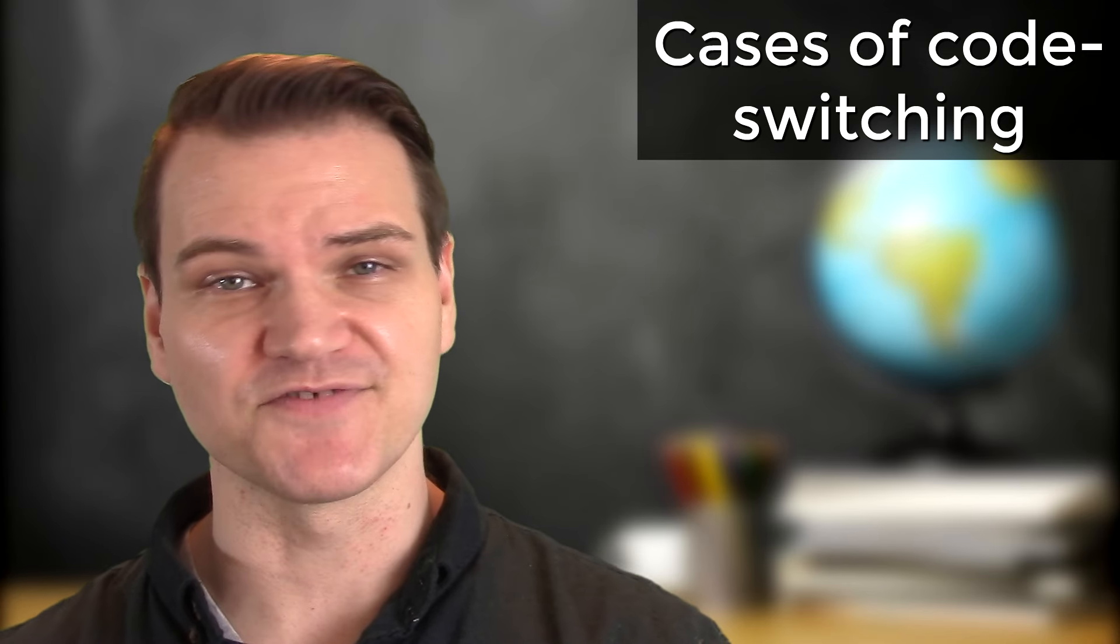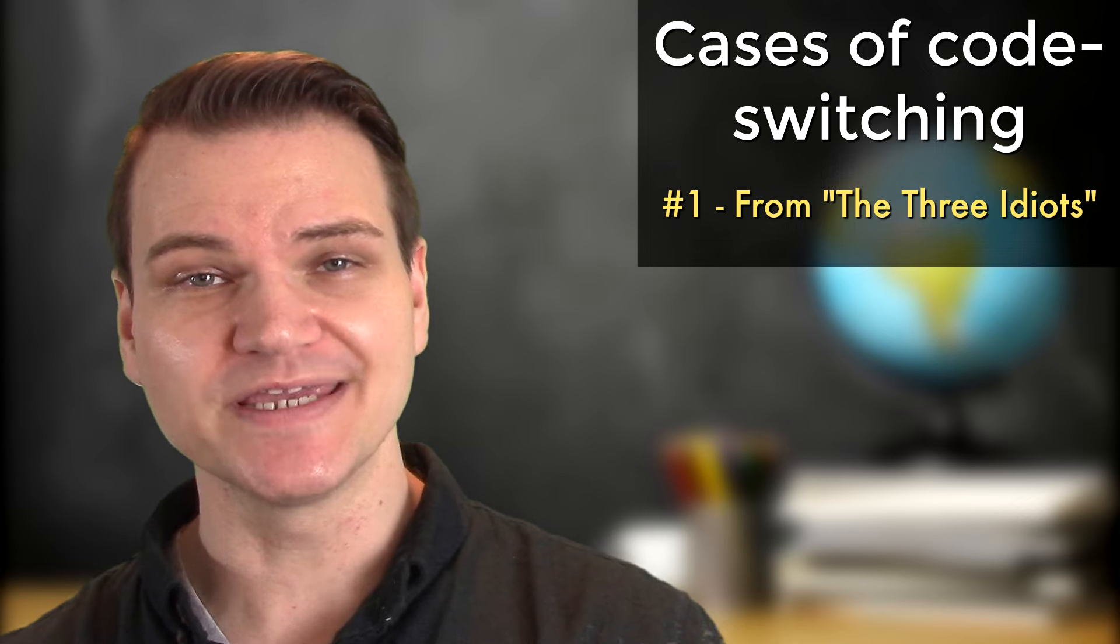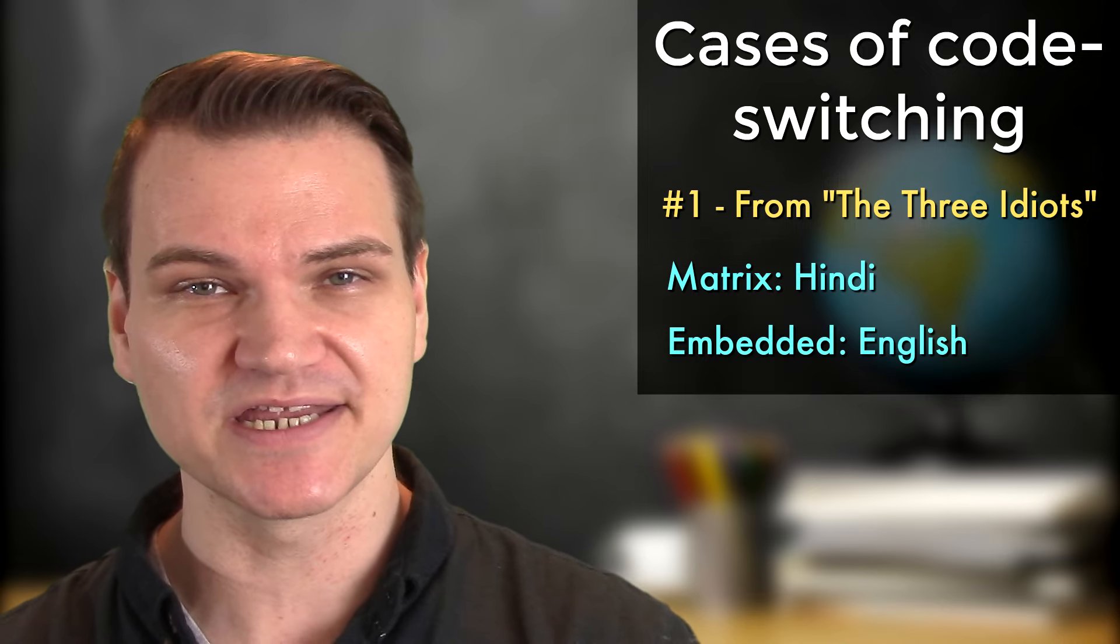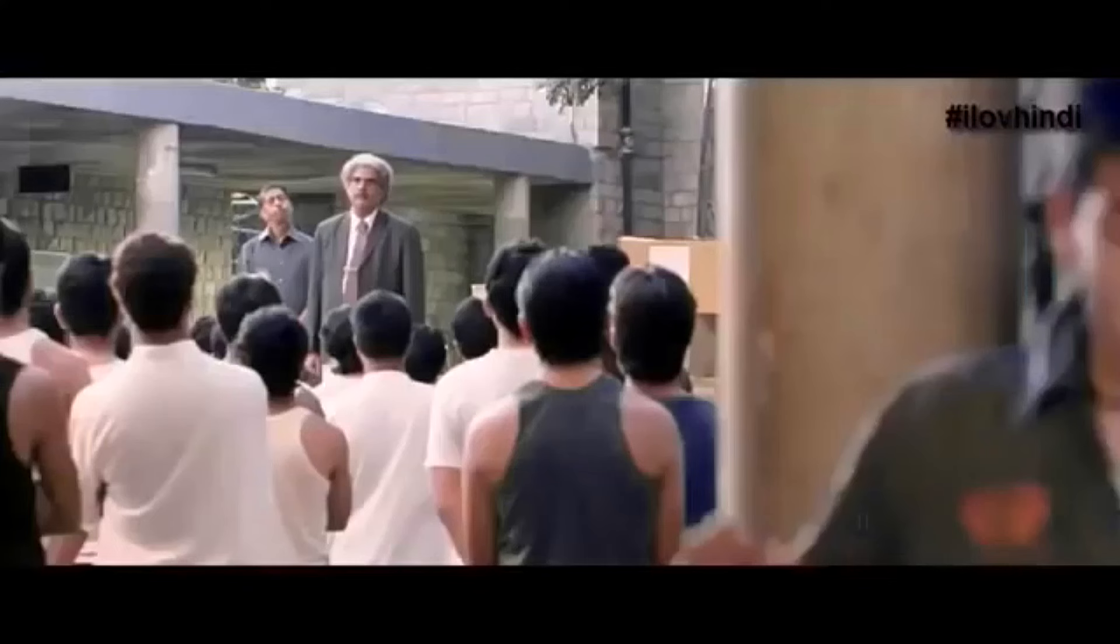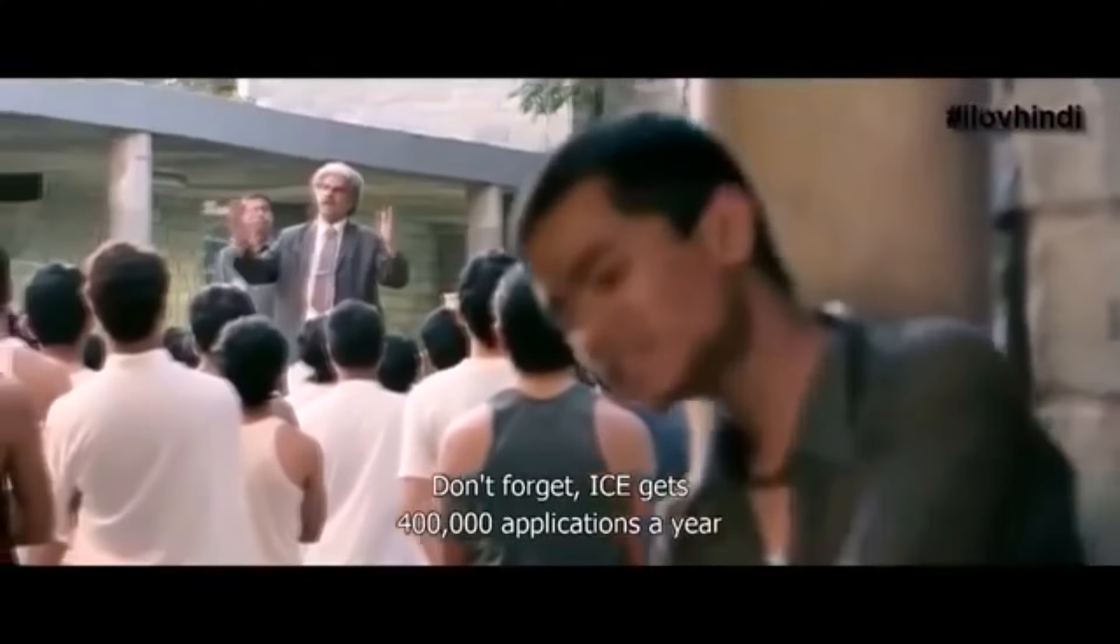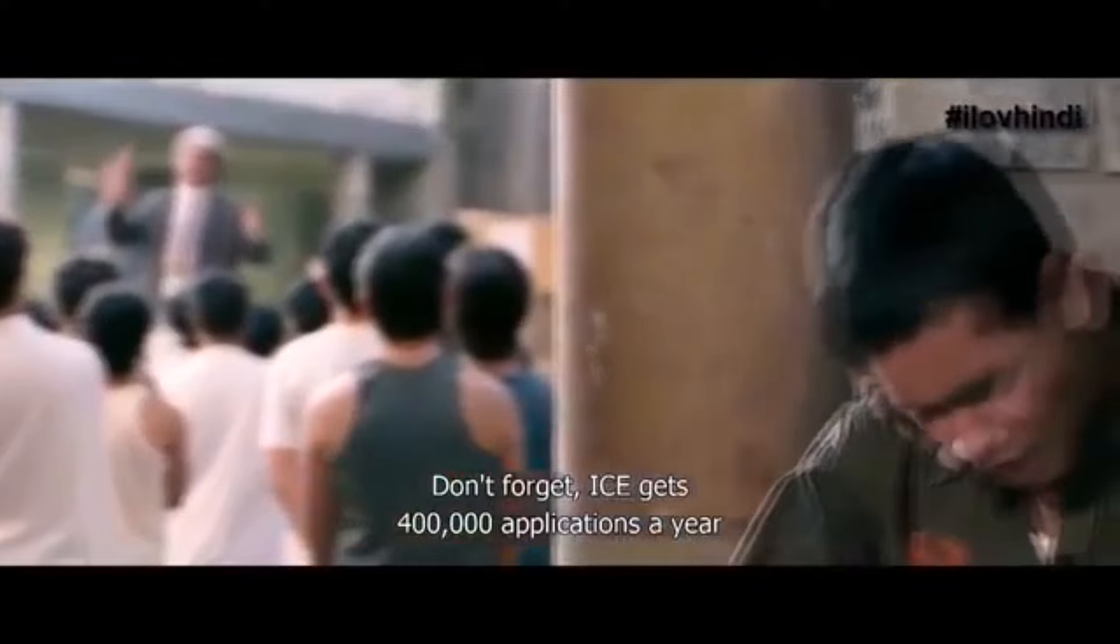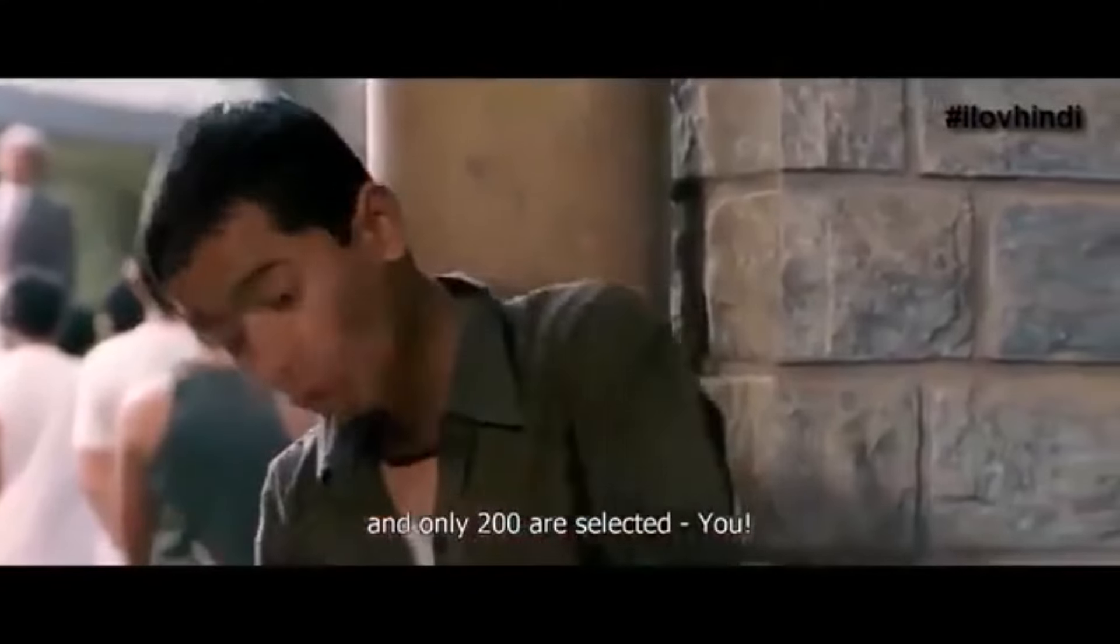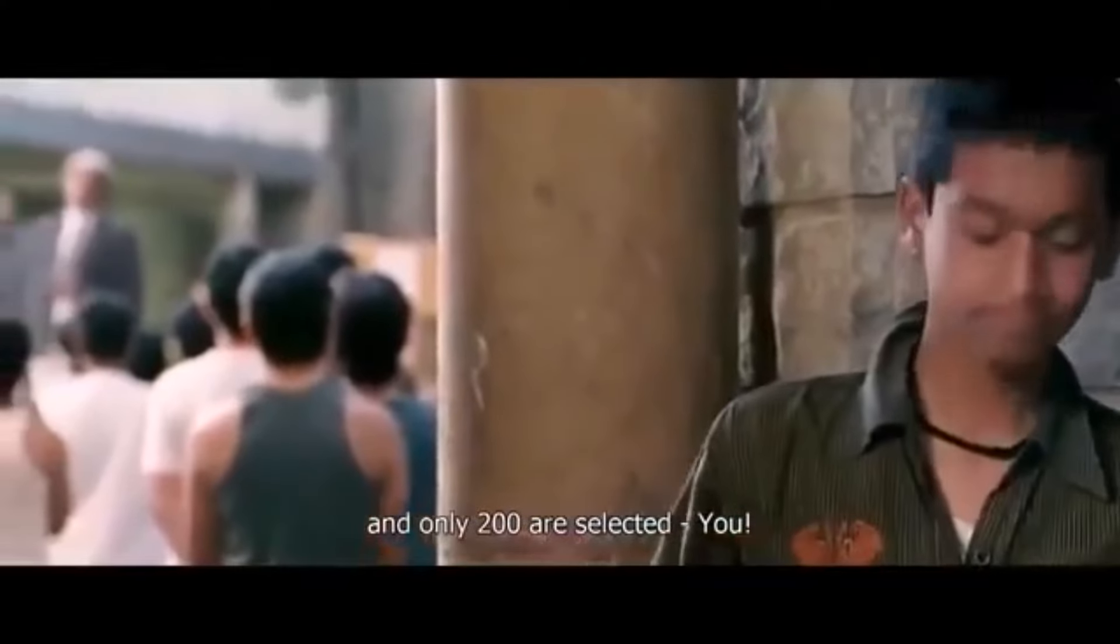Let's look at a couple of cases of code switching. The first one is from the Indian movie, The Three Idiots. The matrix language is Hindi, and the embedded language is English. The background to this scene is that the director of a university is welcoming the incoming freshman students. Don't forget that every year, there are 4,000,000 applications. And only 200 selects. You!